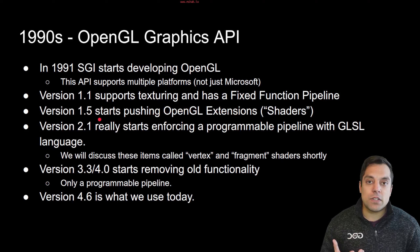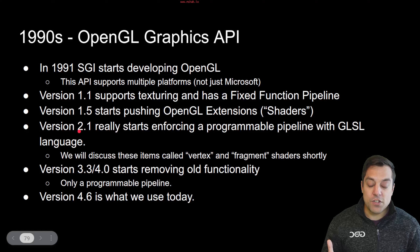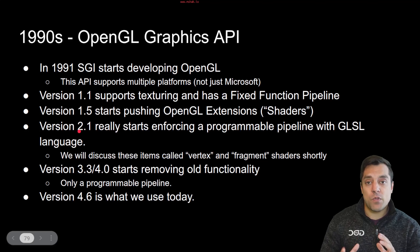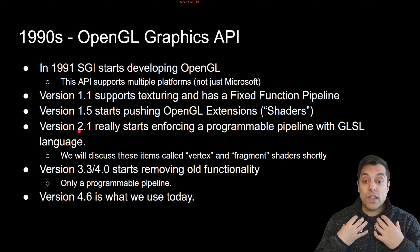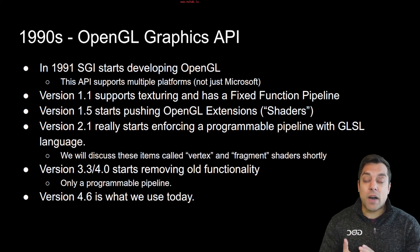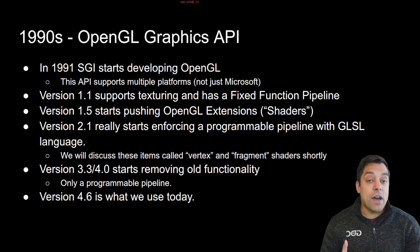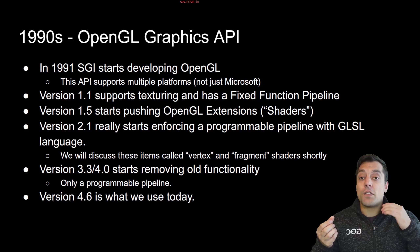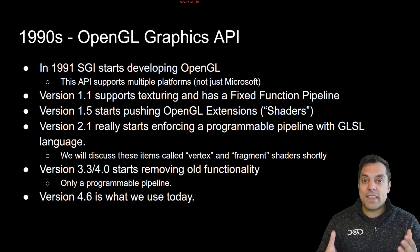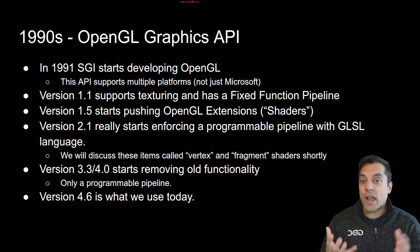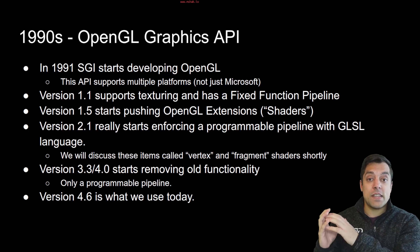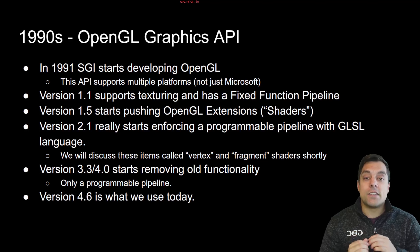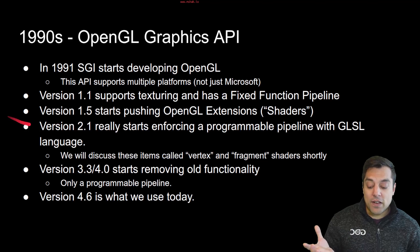Where OpenGL starts getting really interesting and into the modern stage is around version 2.1, where we get something known as a programmable pipeline. That means we as programmers can actually write programs that compile and execute on your graphics card. So now you've got your CPU, which you're used to compiling and running programs on, and your GPU, which can also compile and run programs. That gave us the ability to create neat graphical effects and offload a lot of work from the CPU onto the GPU — and that's where you see the leap in graphics around version 2.1.